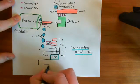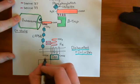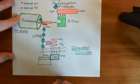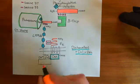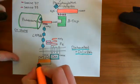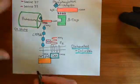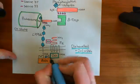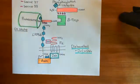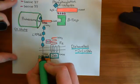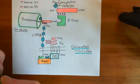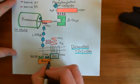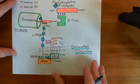Dishevelled is going to bind to axin proteins. This axin protein will still have bound to it a casein kinase-1-alpha enzyme and also a glycogen synthase kinase-3-beta enzyme. So in orange here, this is our axin protein binding to dishevelled. Then we've got the two enzymes: casein kinase-1-alpha, which binds to axin, and glycogen synthase kinase-3-beta. Note that the adenomatous polyposis coli protein is not here — it's just axin with the two enzymes.